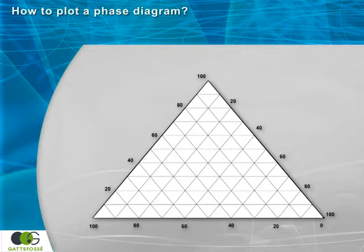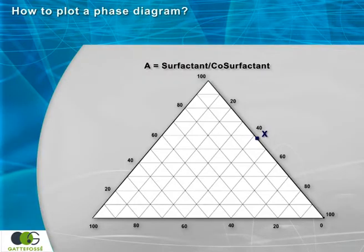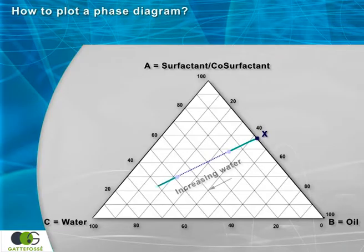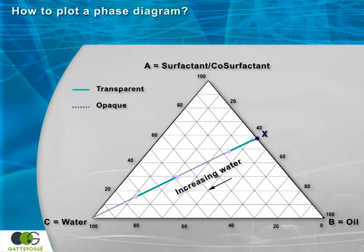The starting formulation X is prepared by mixing A, which is the surfactant, co-surfactant, with B, the oil. Then formulation X is increasingly diluted with C, the water. The objective is to record the position of the appearance of turbid, opaque and transparent phases, which correspond to the generation of emulsion and micro-emulsion phases during the course of dilution.